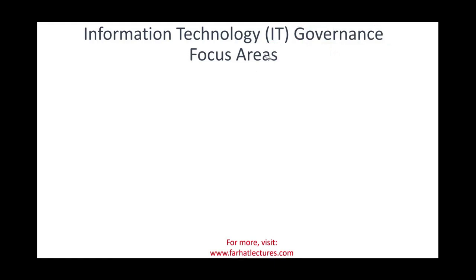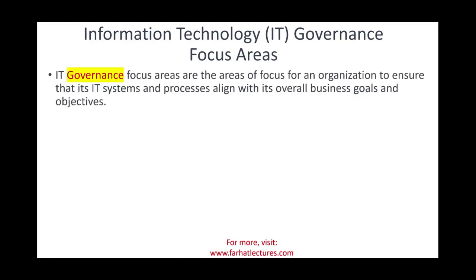Because IT is very important, we are going to have IT governance focus areas. The purpose is to ensure that IT systems and processes are aligned with the overall business goals and objectives. You will see this theme again and again as we look at those focus areas. Your IT system — software, hardware, people, and network — has to be aligned with the overall purpose of your business goals and objectives. IT and business should be going in the same direction.